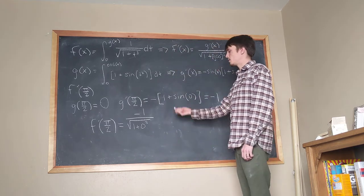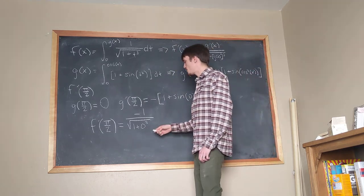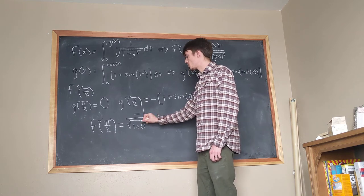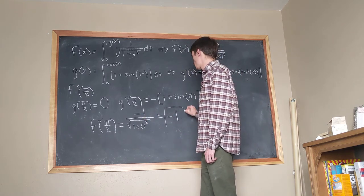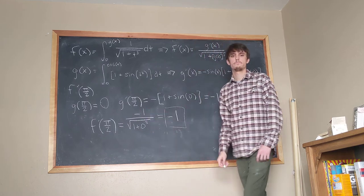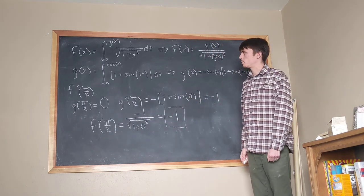But that's, I mean, that's 0. 1 plus 0 is 1, this is equal to negative 1 over the square root of 1, which is negative 1. And that's the answer. Yay! That wasn't so bad. Okay, great.